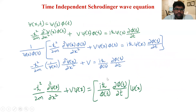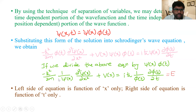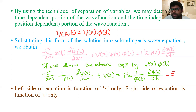Since V(x) is potential energy, the left side represents a sum of kinetic and potential energies equal to total energy E. The left side is a function of x only, independent of time, while the right side is a function of t only, independent of x. This separation allows us to apply the equation to either time-dependent or time-independent systems.